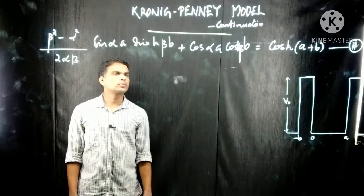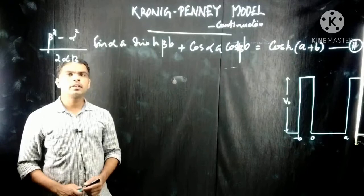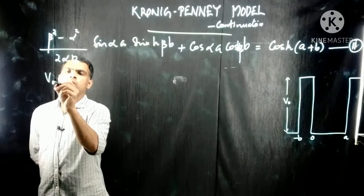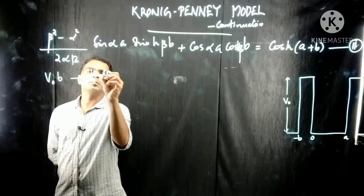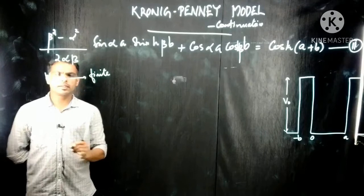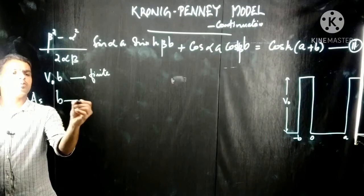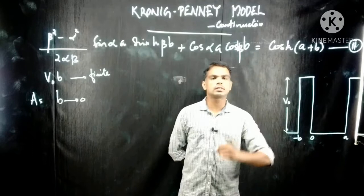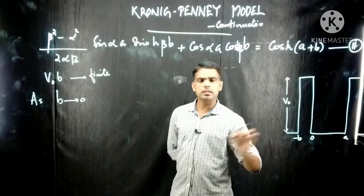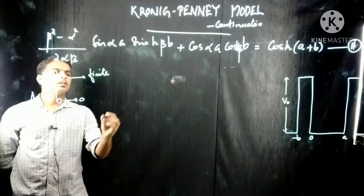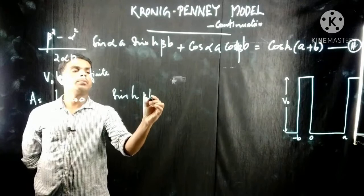Let us analyze the significance of this equation. Kronig and Penney assumed the quantity V₀b to be finite. If V₀b is finite, then as b tends to zero — meaning the barrier width is very small — V₀b remains finite. In that case, what happens to sinh(βb)?